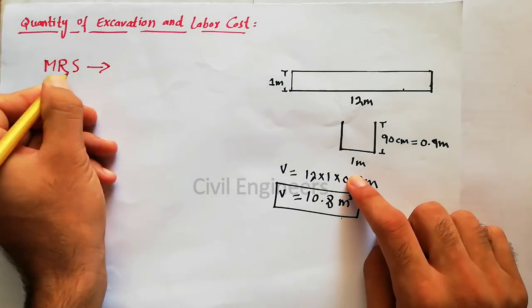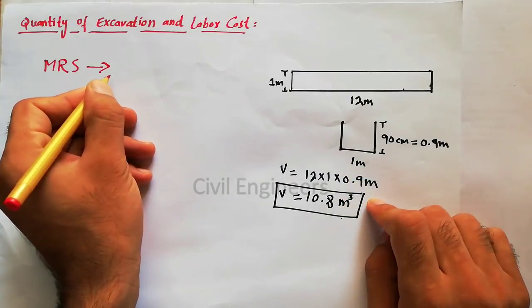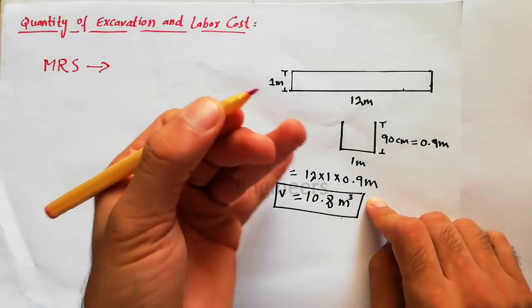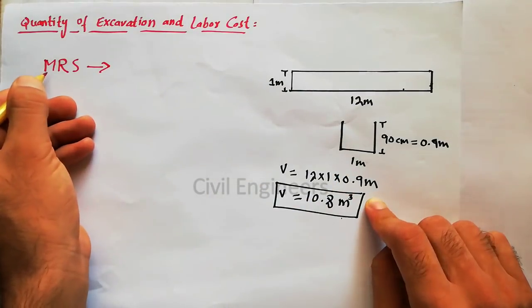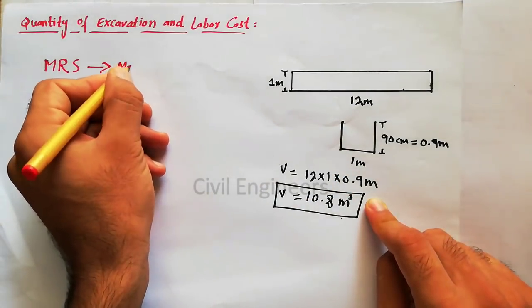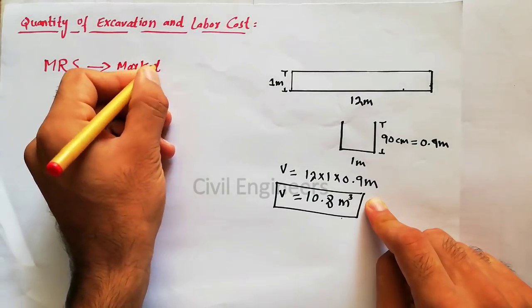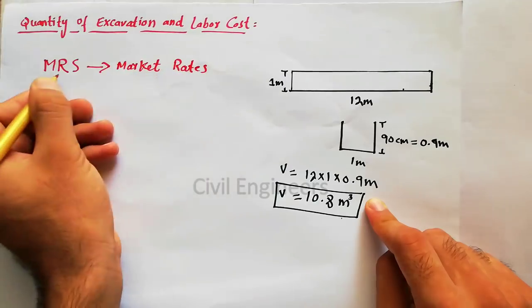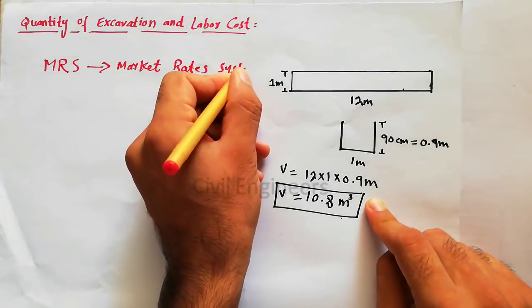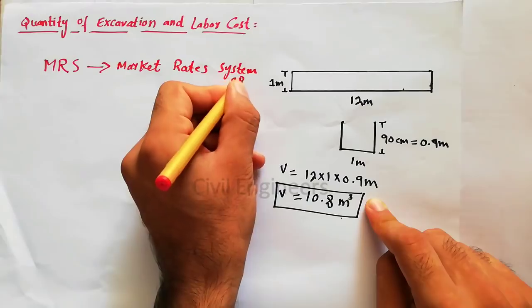MRS stands for, in construction works or cost of project, we can find with MRS. So M means Market and R means Rates. Market Rates System or Schedule.